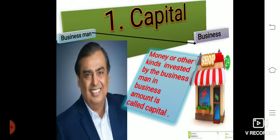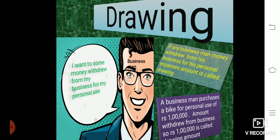The first accounting term is capital. Capital means when a businessman invests money in business from their personal property, it is known as capital. The second term is drawing. When a businessman withdraws money from the business for personal use, it is known as drawing. For example, if a businessman purchases a bike for personal use worth rupees 1 lakh, the amount withdrawn from the business is called drawing.